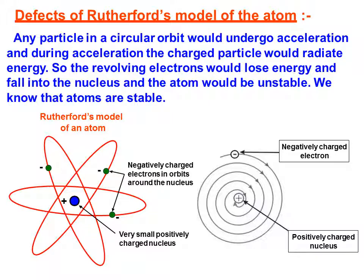Defects of Rutherford model: any particle in a circular orbit would undergo acceleration, and during acceleration the charged particles would radiate energy. So the revolving electron would lose energy and fall into the nucleus, and the atom would be unstable. But as we know, atoms are stable — this instability was the main drawback of Rutherford's model.